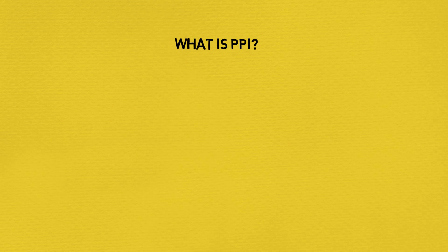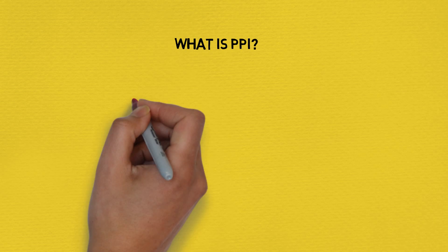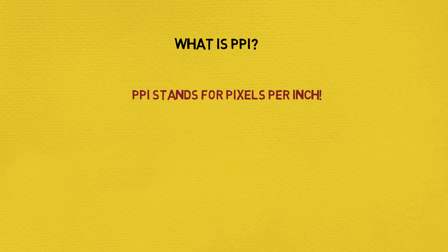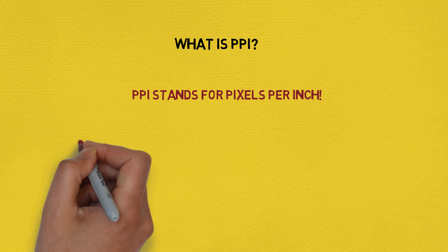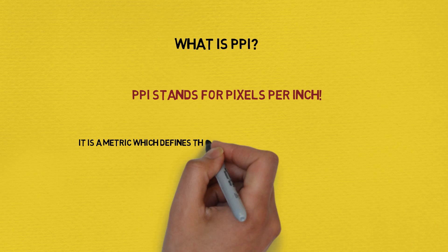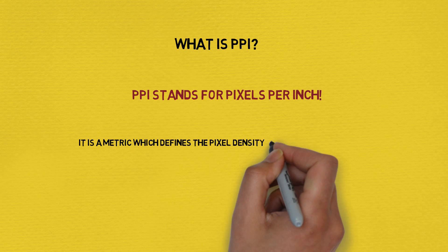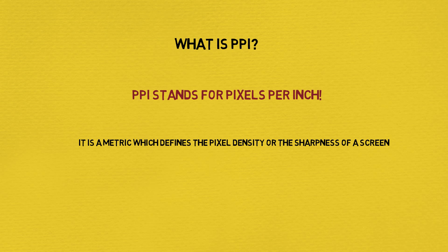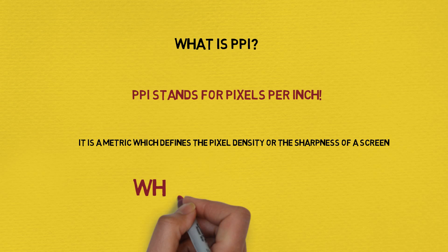Hi, have you ever wondered what is PPI in electronic devices? PPI stands for pixels per inch. It is a metric which defines the pixel density or the sharpness of a screen.